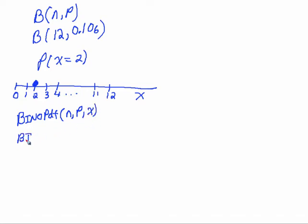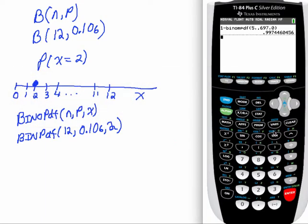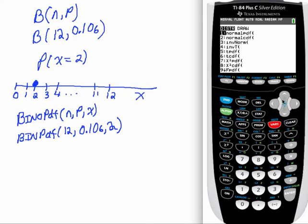So in our case, that's going to be BINOPDF. Our number of trials is 12, our probability of success is 0.106, and the number that we are looking for is 2 for the x. I always recommend that you write that down first, then go in and type it into the calculator.